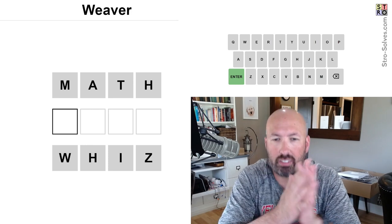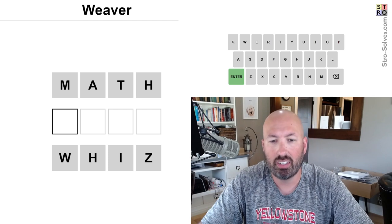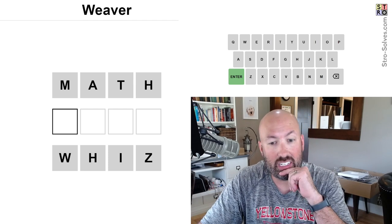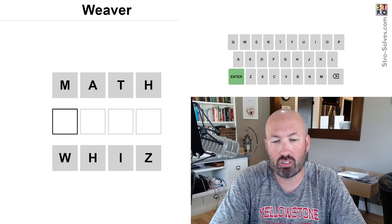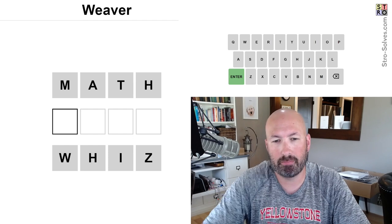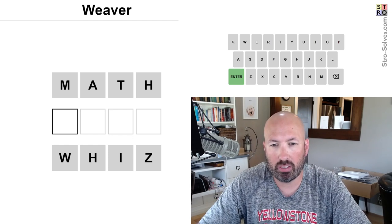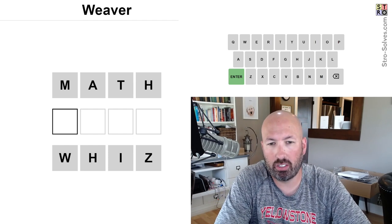So let's see. We're starting with math, ending with whiz. It's interesting. We've got to get to a Z and a W. That seems tricky. I'm thinking something like Watt might be good in there.